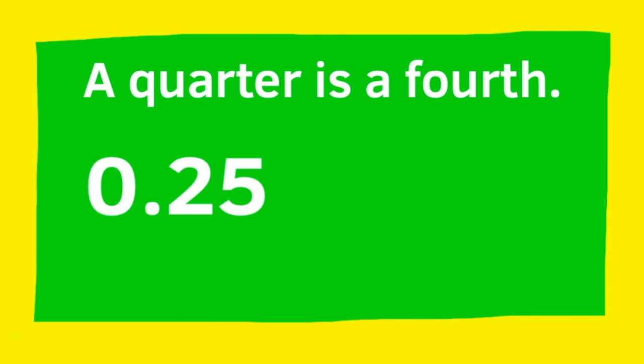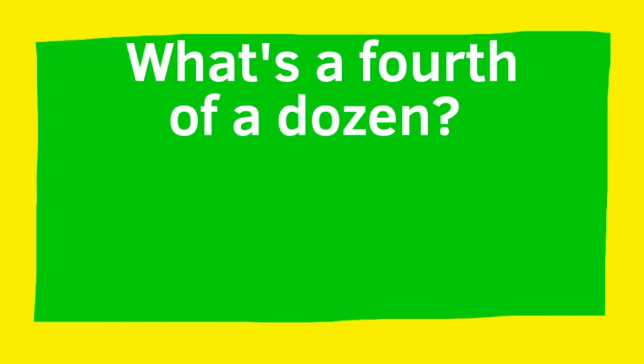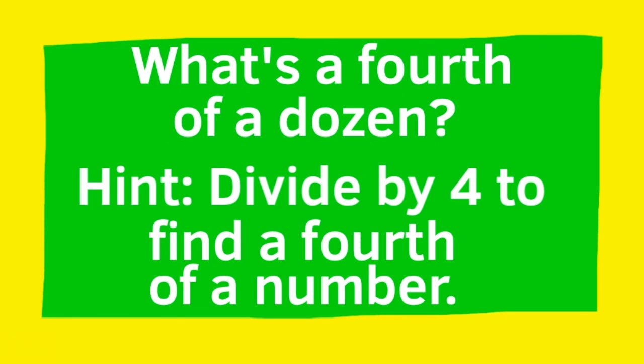Since you know that a quarter is a fourth, then let me ask you this question. What is a fourth of a dozen? Here's a hint. Divide by 4 to find a fourth of a number. A fourth of a dozen is 3, because 12 divided by 4 is 3.